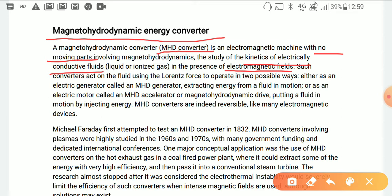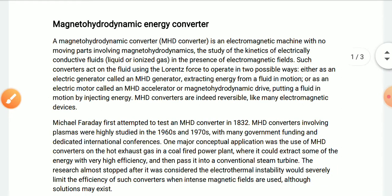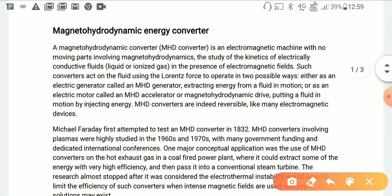By using conductive fluid, electricity can be generated using the magnetohydrodynamic converter. Such converters act on the fluid using the Lorentz force to operate in two possible ways: either as an electric generator called an MHD generator, which extracts energy from the fluid in motion.